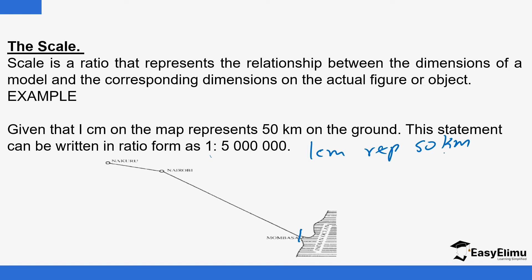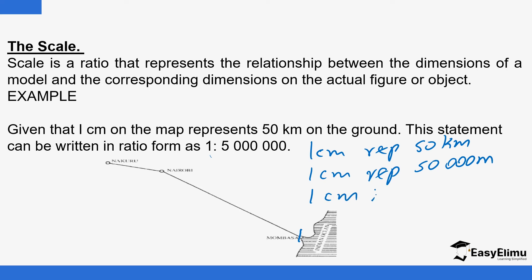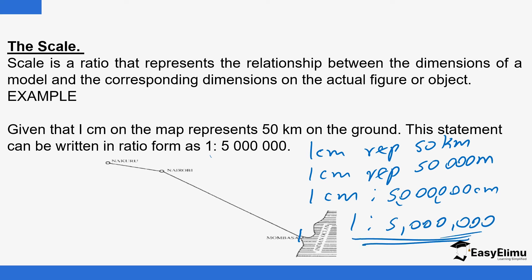To convert 50 kilometers to centimeters: since kilo means one thousand, 50 kilometers equals 50,000 meters. Then multiplying by 100 to convert meters to centimeters gives 5,000,000 centimeters. So one centimeter represents 5,000,000 centimeters, and the centimeter units cancel, leaving the ratio 1:5,000,000. That's how you change from representative scale to ratio scale.